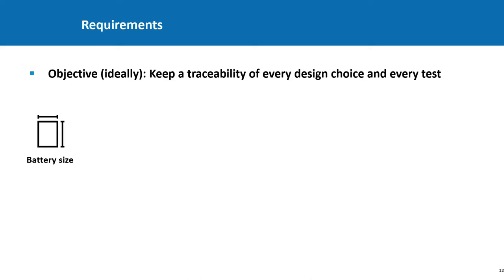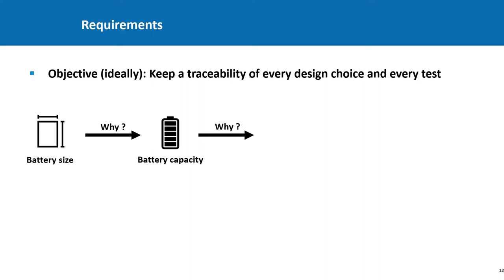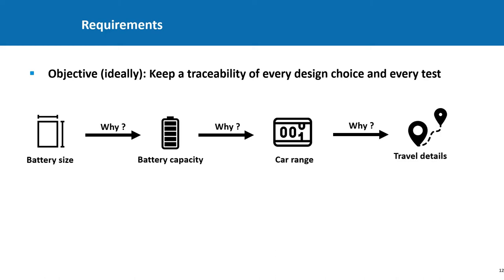In specification, a key idea is traceability. Traceability is considered an important tool to justify requirements — it allows us to trace back the chains of decision which led to a requirement. Let's say that you have a requirement on the battery size. Where does it come from? Well, traceability can show that it comes from a requirement on the battery capacity. But why does it have to be that capacity? Maybe because of the car range, which is 500 kilometers. But why 500 kilometers? Maybe because the user wants to go on holidays with his car.